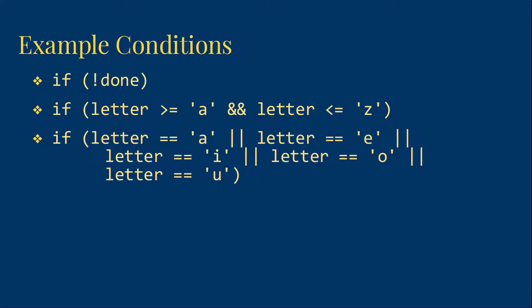So I've got an example here for each of those. If NOT done. Done here must be a Boolean variable. If done is true, NOT done will be false. If done is false, NOT done will be true.